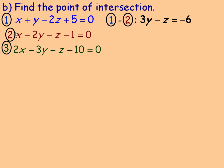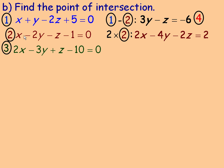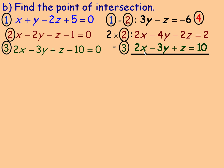Now I choose a different pair — planes 2 and 3 — and eliminate x again. Plane 2 has 1x and plane 3 has 2x, so I multiply plane 2 by 2 to get coefficients 2, -4, -2, with the constant becoming +2 on the right. Plane 3 stays the same. Subtracting: (-4y) - (-3y) = -y, and (-2z) - (z) = -3z, and 2 - 10 = -8. That gives equation 5: -y - 3z = -8.